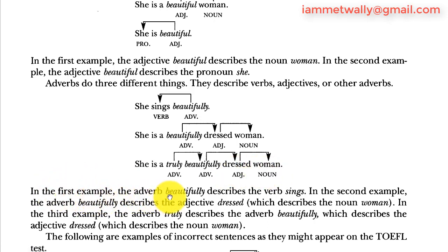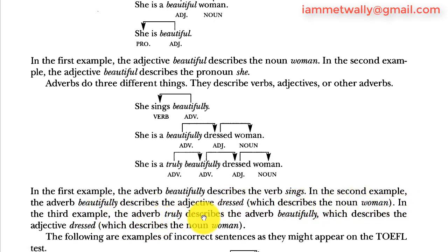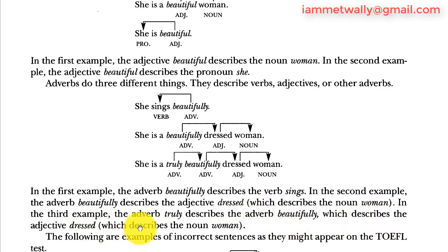In the first example, the adverb beautifully describes the verb sings. In the second example, the adverb beautifully describes the adjective dressed, which describes the noun woman. In the third example, the adverb truly describes the adverb beautifully, which describes the adjective dressed, which in turn describes the noun woman.